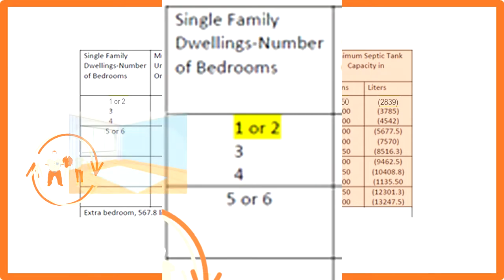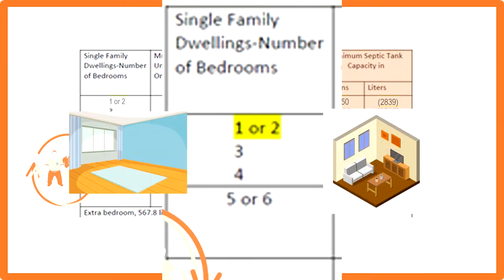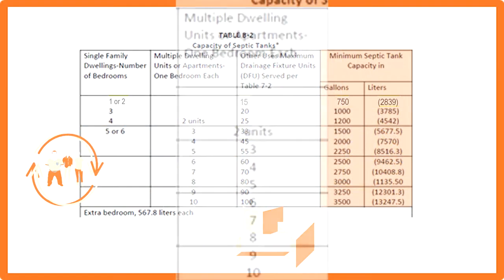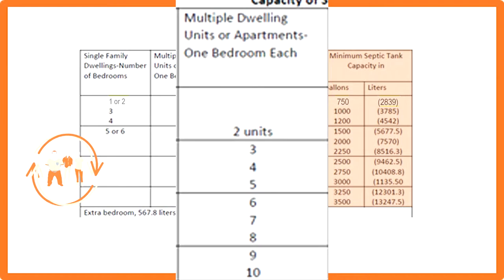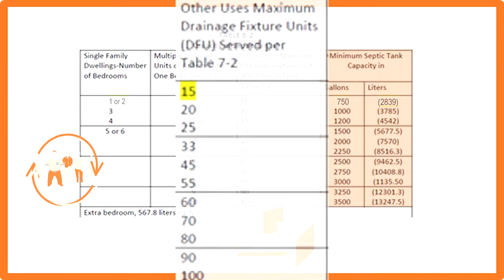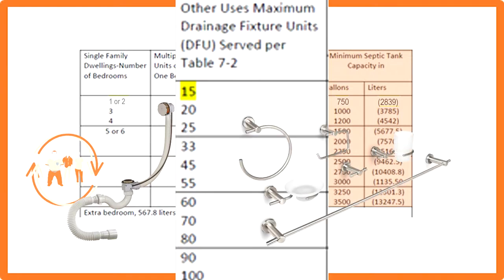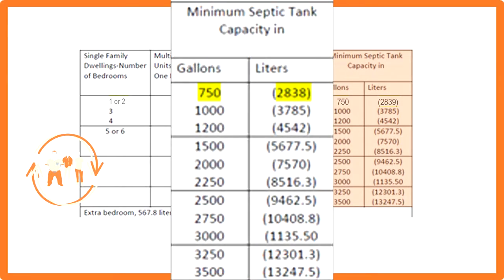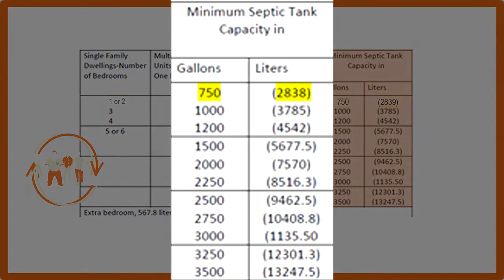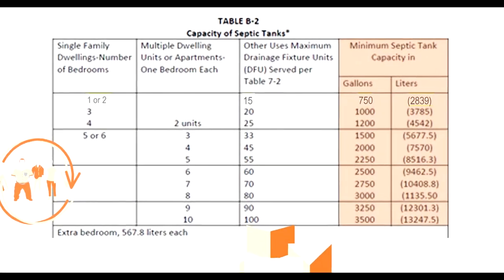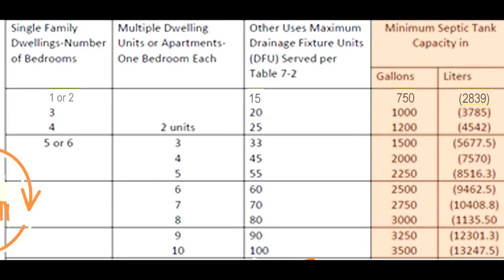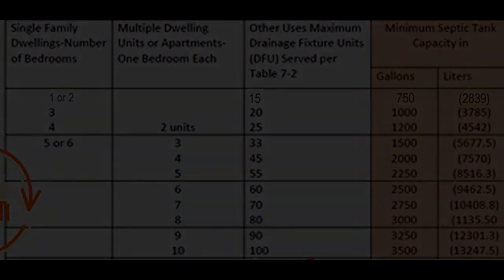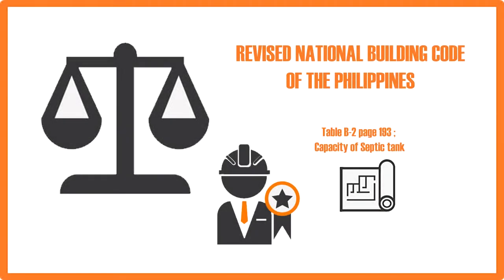The first column shows dwelling numbers and the proposed three-story has one or two. The second column is for multiple dwelling units, which is why there are no highlighted numbers. The third column is drainage fixture units — the proposed three-story has 15 units. The last column is the minimum capacity in gallons and liters. The proposed three-story has a minimum capacity of 750 gallons and 2,838 liters. Overall, the proposed three-story project has more than one or two bedrooms, and all information is from the Revised National Plumbing Code of the Philippines.